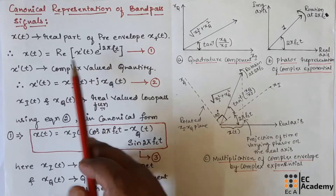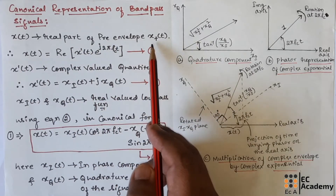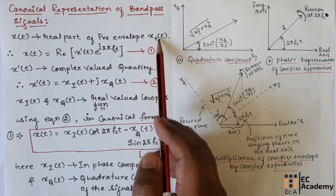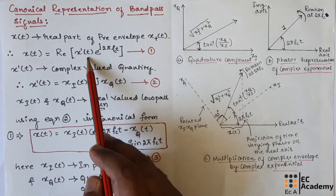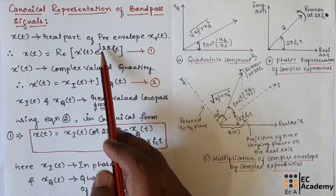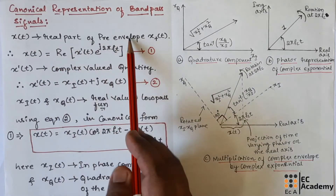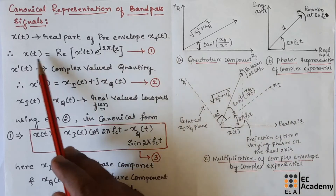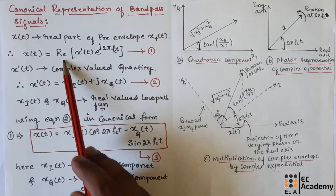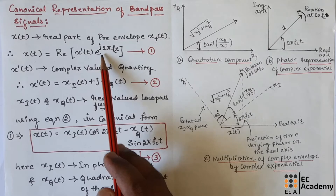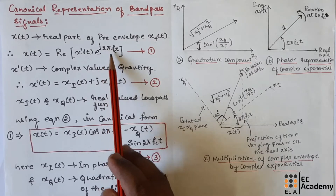In the previous lecture, we understood that x(t) is the real part of pre-envelope x+(t). So we can represent x+(t) as x̃(t) into exponential to the power of j 2πfct. Since x(t) is the real part of x+(t), we can write x(t) is equal to real part of x̃(t) into exponential to the power of j 2πfct.